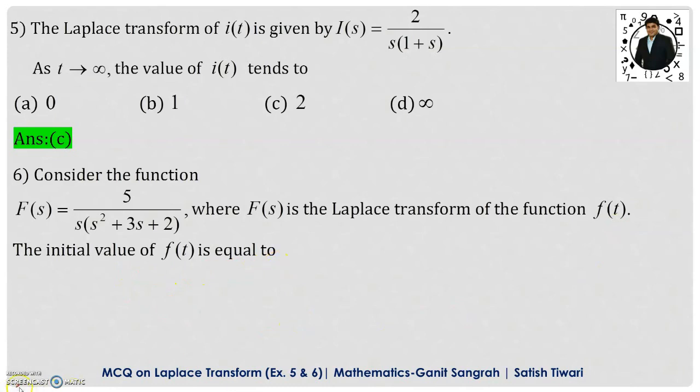So here we have to apply the initial value theorem. It is limit t tending to 0 of f(t) equals limit s tending to infinity of s into F(s). So there is no need to find out the function of t for this one. We can directly get the initial value. I will use this RHS part. So in the RHS part we are multiplying F(s) with s. So here also we have multiplied with s.